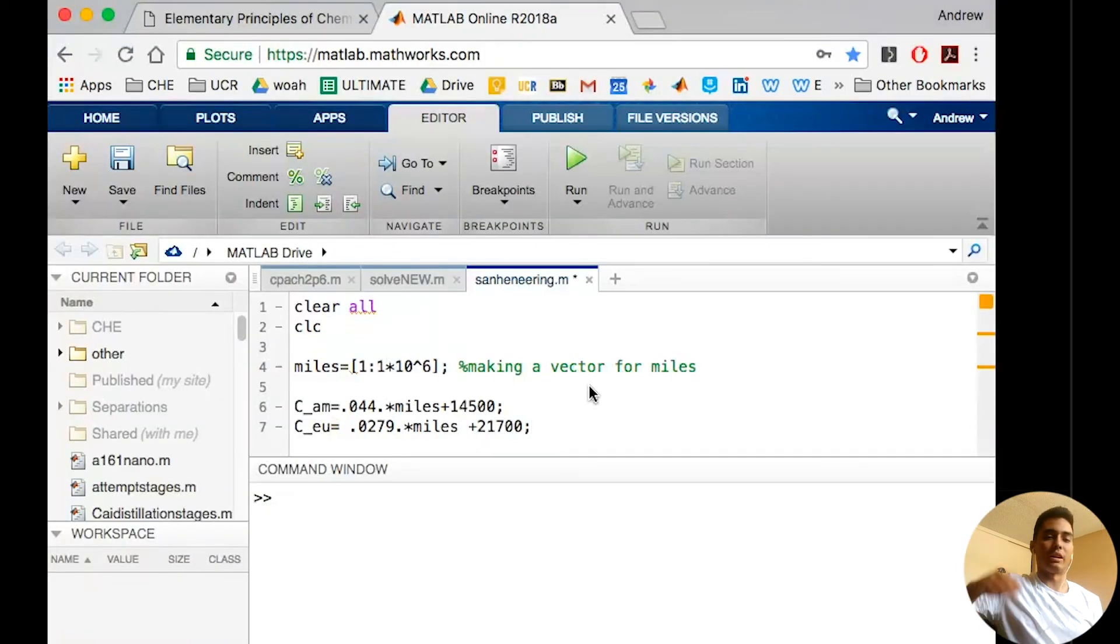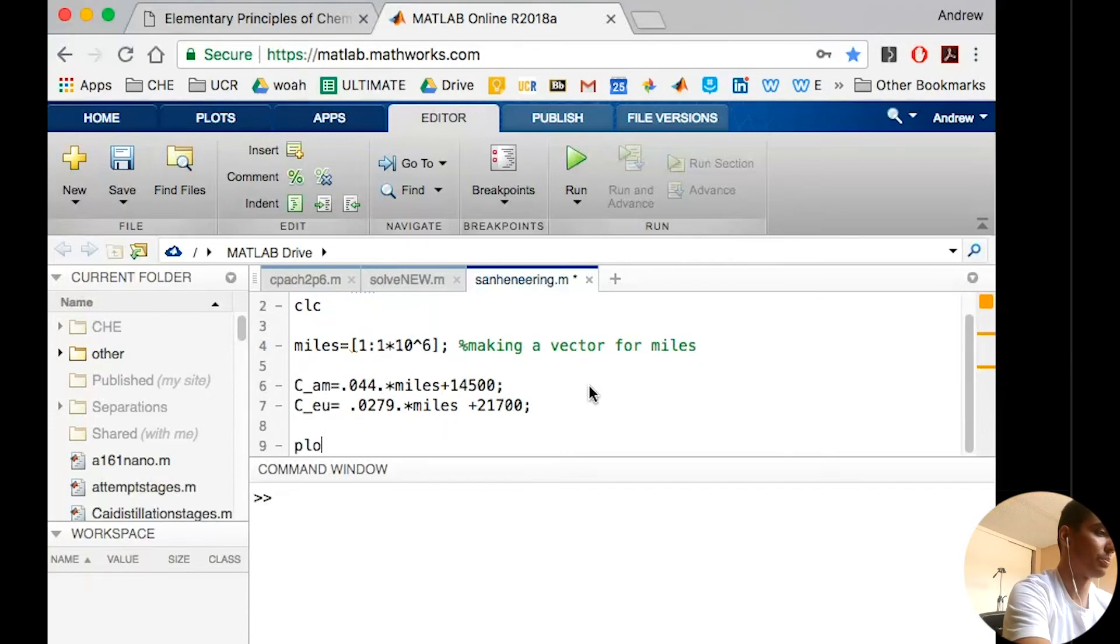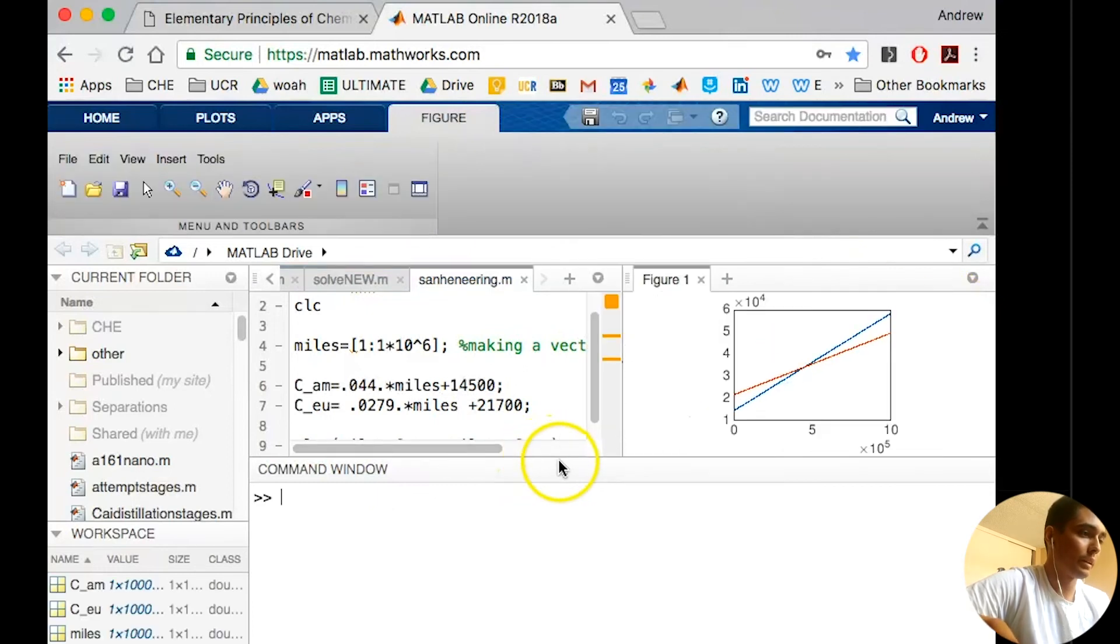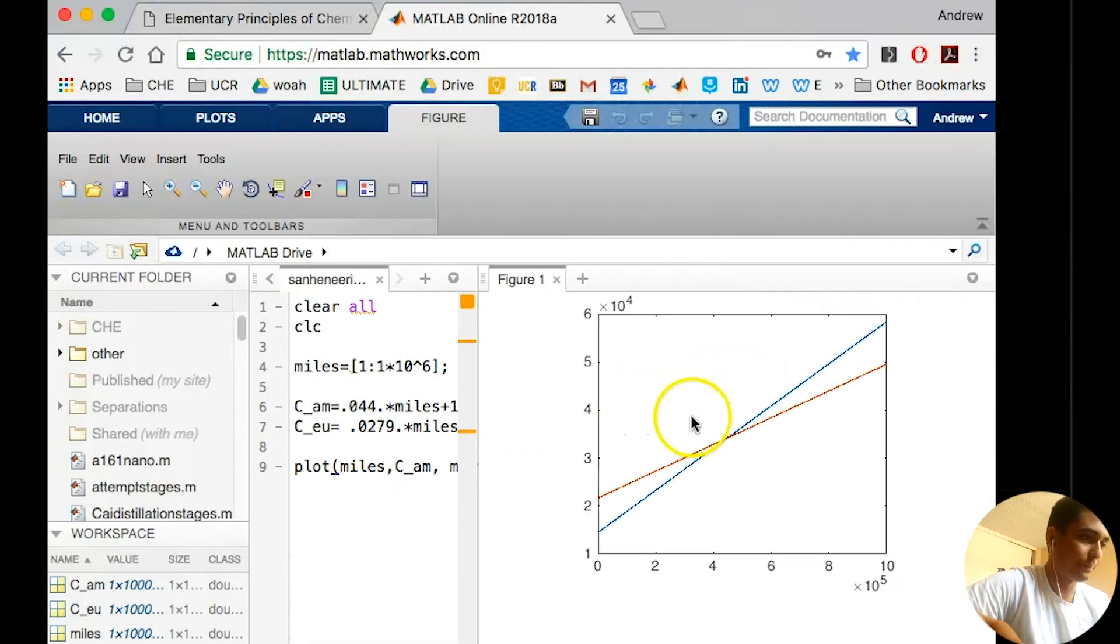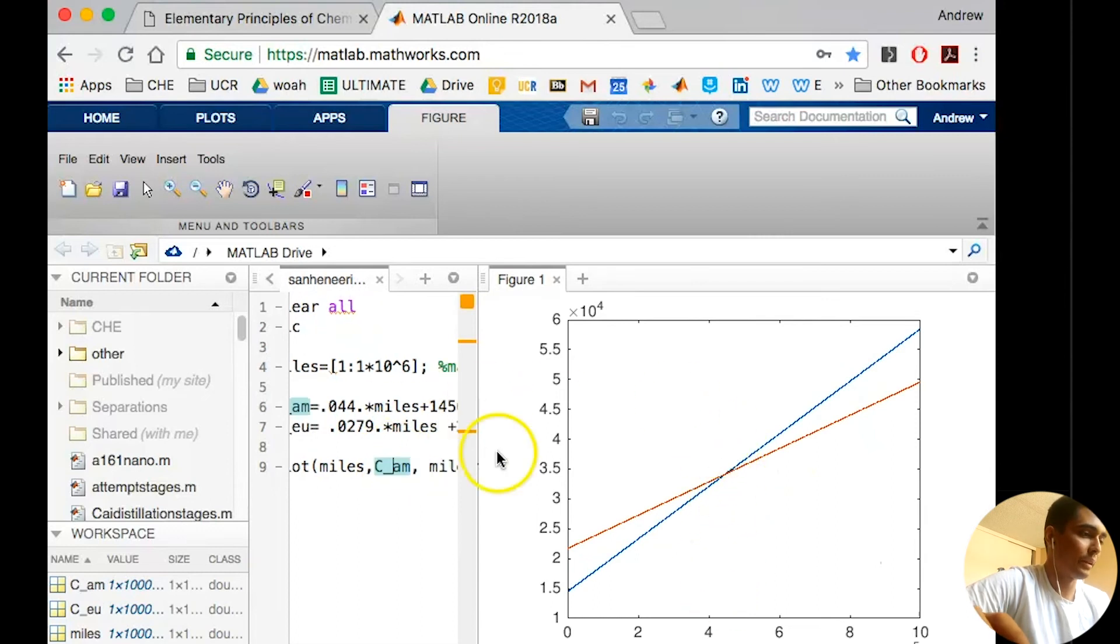I'm making a line from European and a line from American. Then I'm going to plot those two together. I'm going to do plot miles is x and c American is y. I'm going to plot miles again and c European. If I run this, let's see what happens. Lo and behold, we got the graph that we kind of attempted to design. Our goal is to solve for this guy. We can kind of estimate that it is around 450,000. But we can get this exact number. We can use a MATLAB built-in function solve to solve for the actual value of the miles.